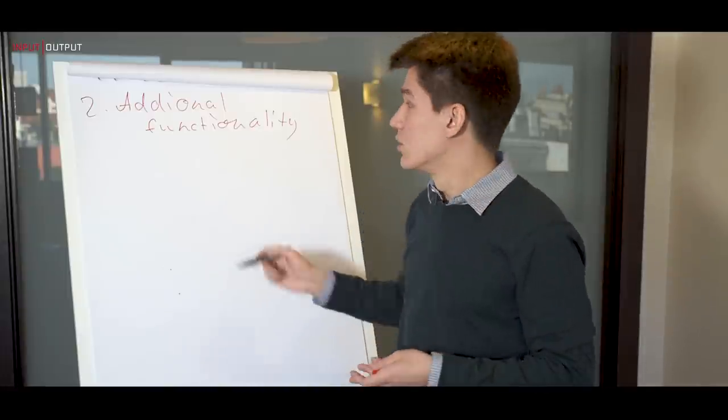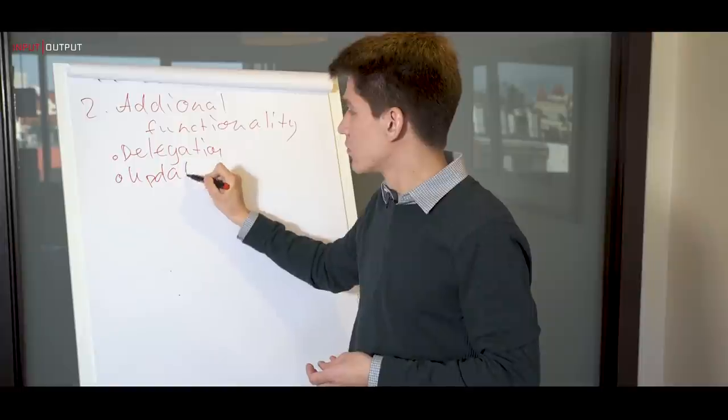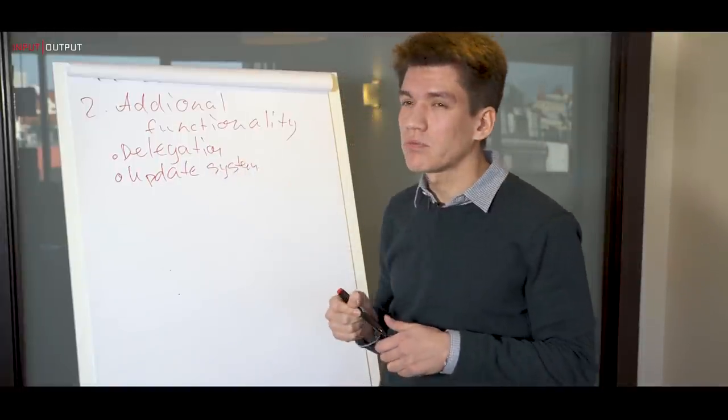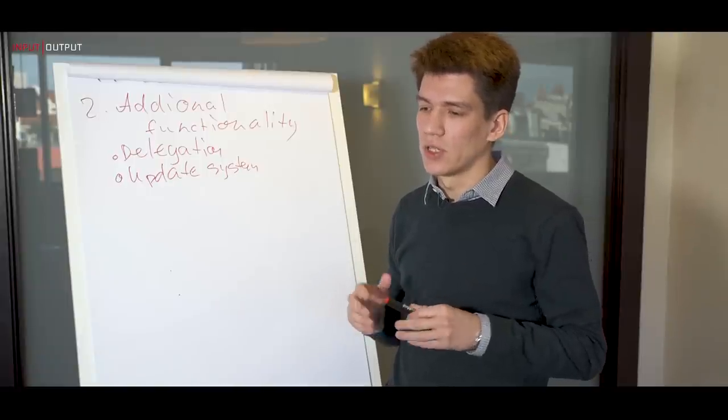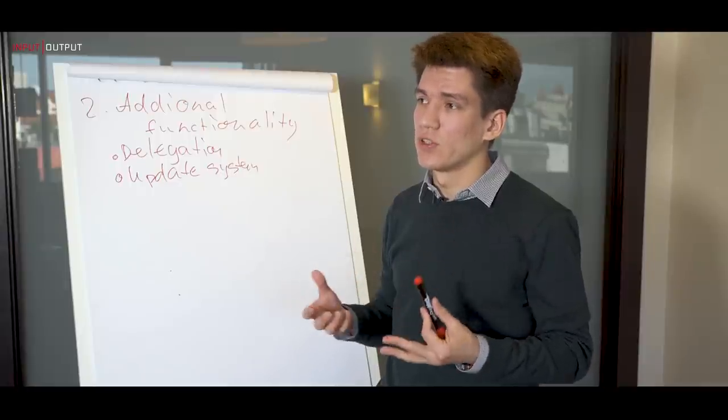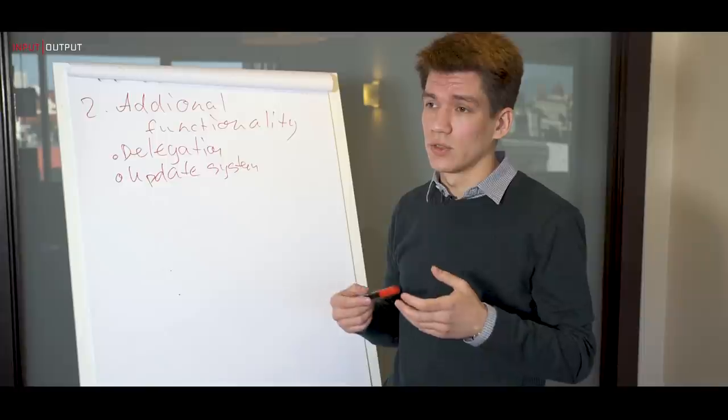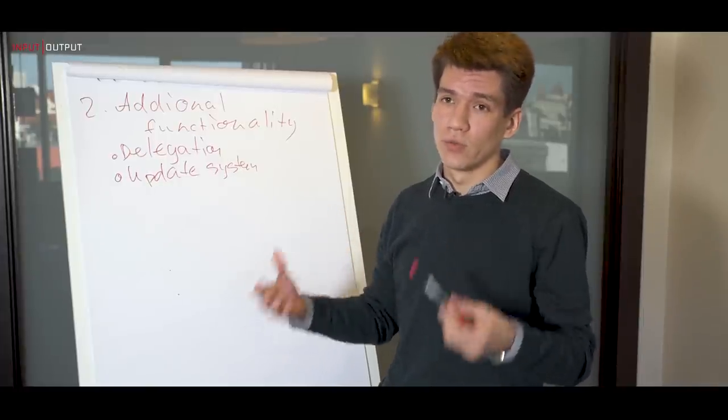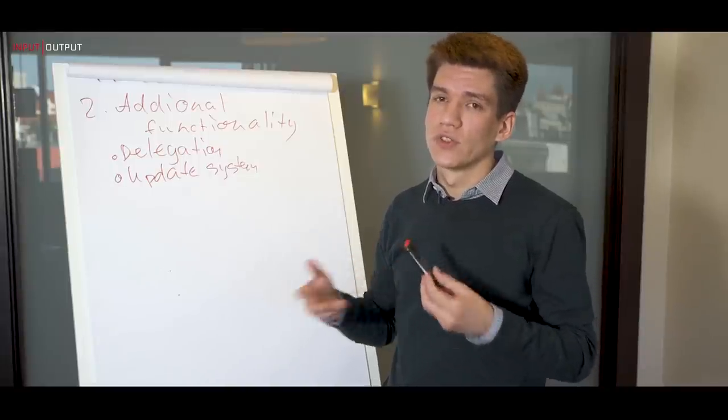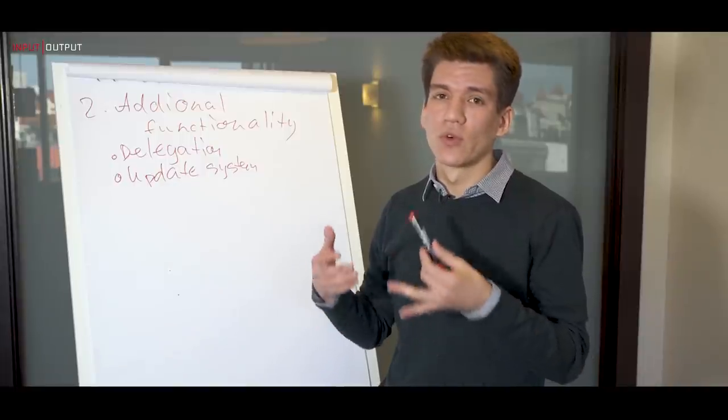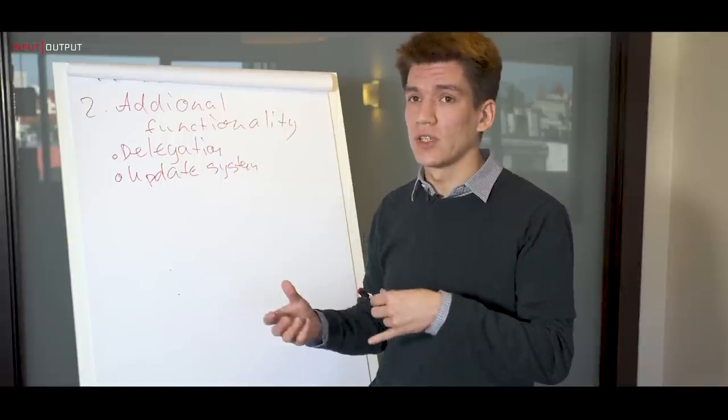Two examples here will be delegation and update system. So delegation is defined in original Ouroboros paper. It's a very simplified delegation and descriptions there, it doesn't provide you a good guidance on how to implement this. And first question was, should we have delegation certificates be posted to blockchain or should they be exchanged off-chain?